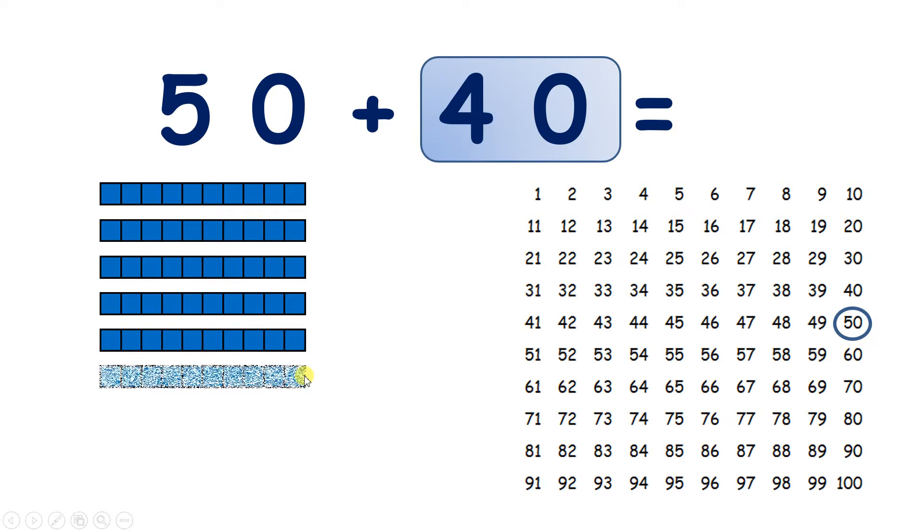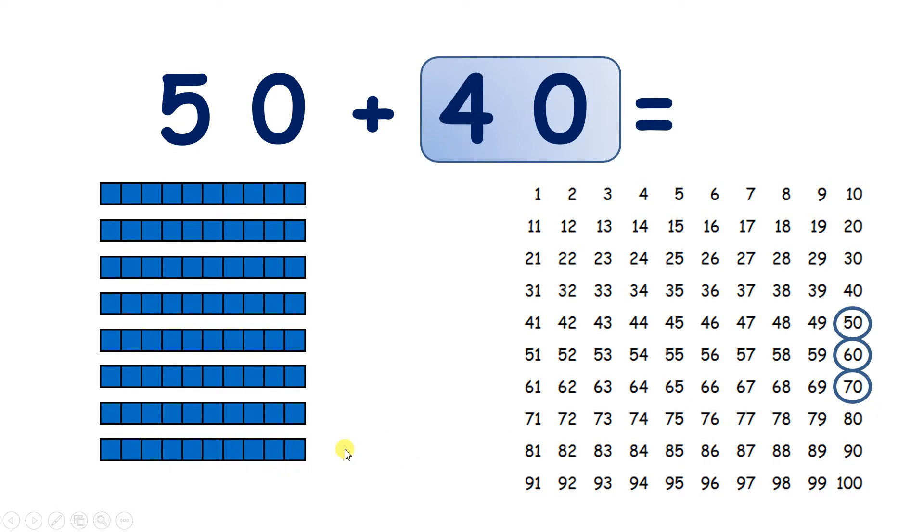So if I add 1 ten, I'll have 60. If I add 2 tens, I'll have 70. 3 tens, I'll have 80. And 4 tens, I'll have 90. So I've added 40 because I've added 4 tens, and this has given me my answer of 90.